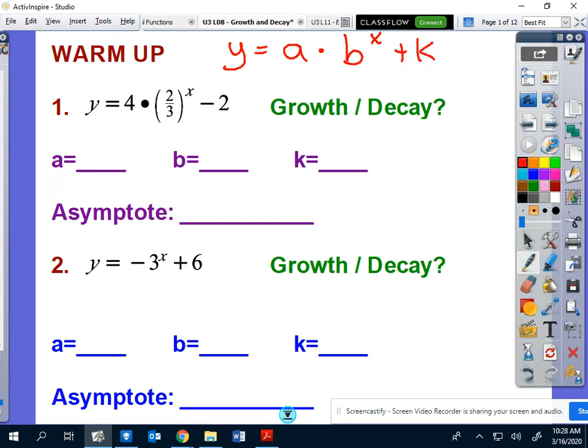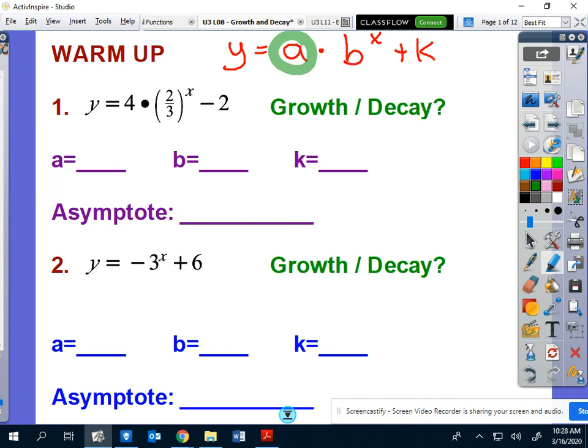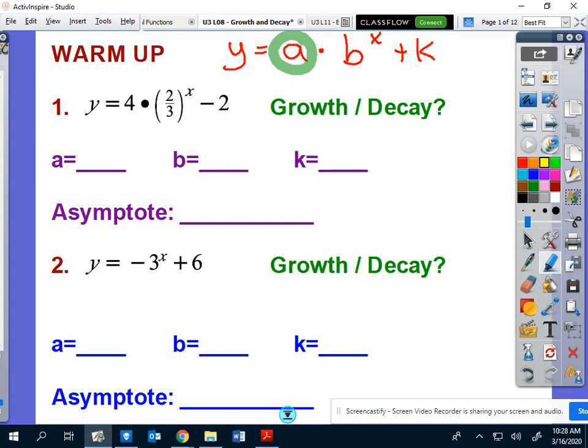So our three major players here are your a, your b, and your k. We want to be able to determine who a is, who b is, and who k is, because they each have a role to play.